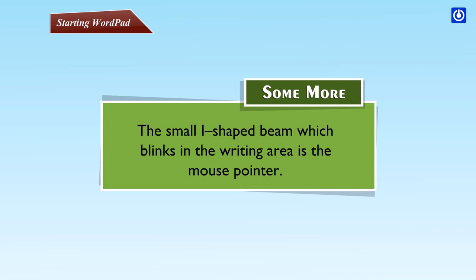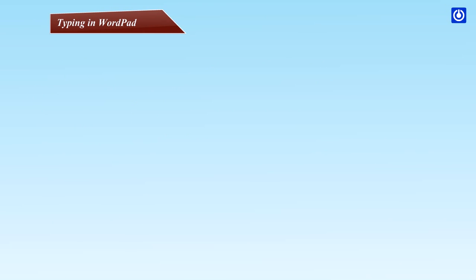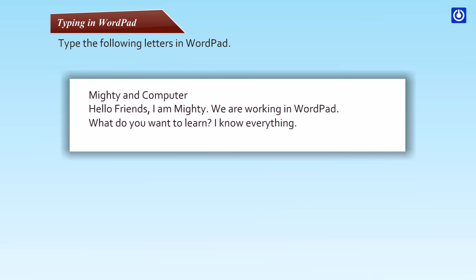The small I-shaped beam which blinks in the writing area is the mouse pointer. Let's see how to write in WordPad. Type the following letters in WordPad — Mighty and Computer. Hello, friends. I am Mighty. We are working in WordPad. What do you want to learn? I know everything.